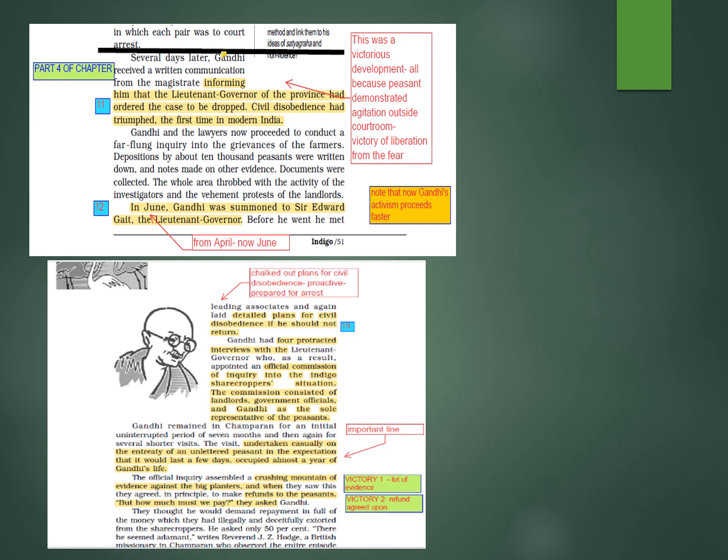The commission consisted of landlords, government officials, and Gandhi as the sole representative of the peasants. Gandhi remained in Champaran for an initial uninterrupted period of seven months and then again for several shorter visits. The visit, undertaken casually on the entreaty of an unlettered peasant in the expectation that it would last a few days, occupied almost a year of Gandhi's life.